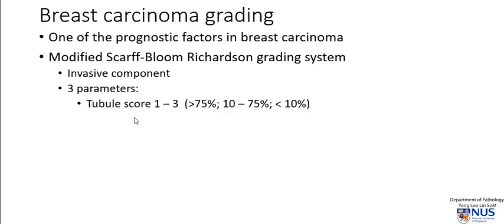The first parameter we look at is the tubule score, which we score from 1 to 3. The more tubules there are, the lower the score. The fewer tubules there are, the higher the score.